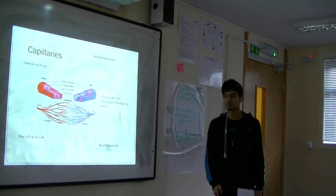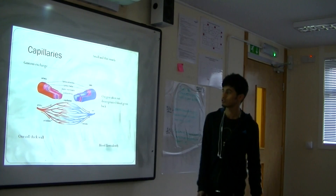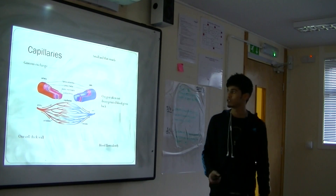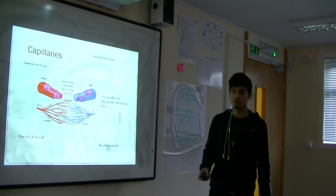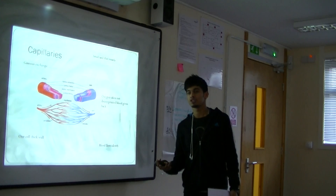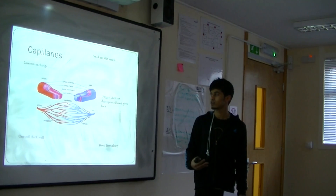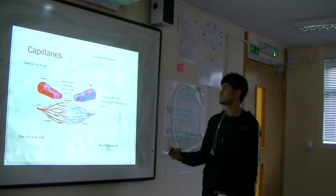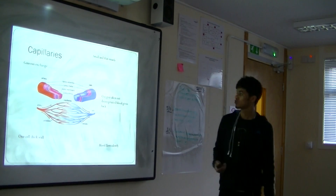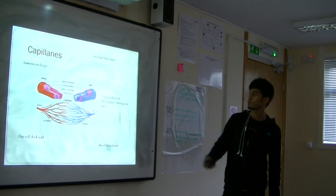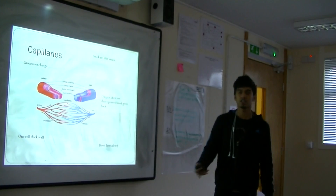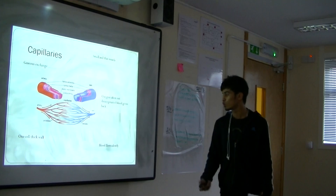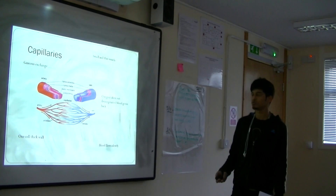Capillaries are at the end of the blood vessels, after arteries and veins. Capillaries allow gas exchange where oxygen and CO2 diffuse across each other. Gas exchange — oxygen is taken out and replaced with CO2. Blood flows slowly through capillaries.